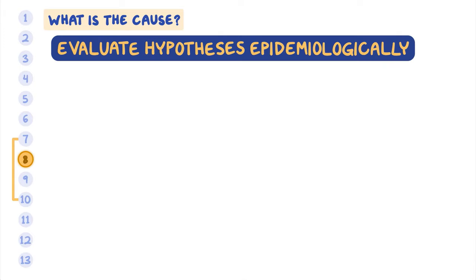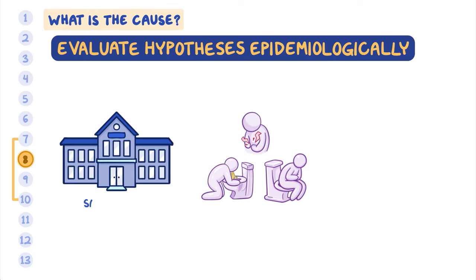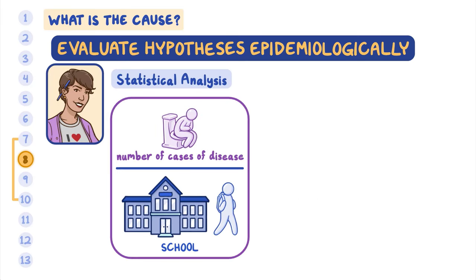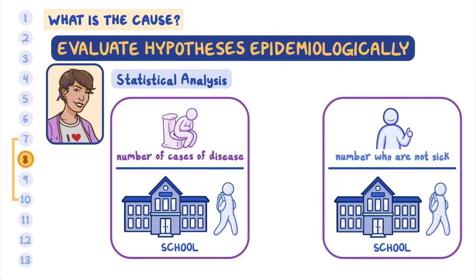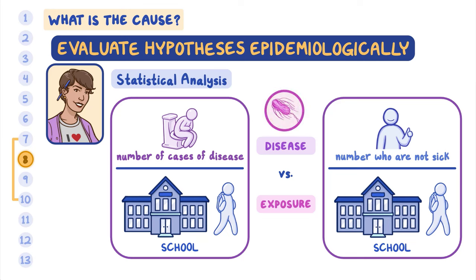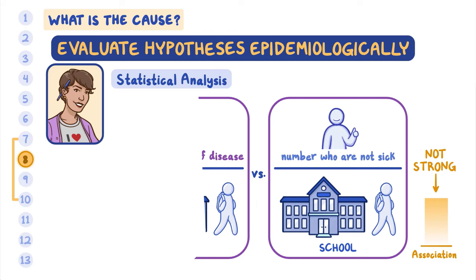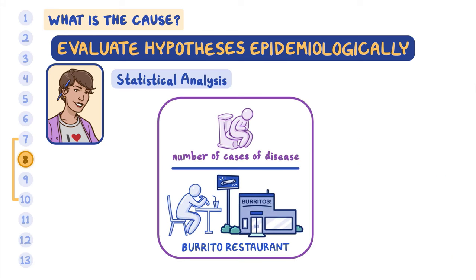These hypotheses can be evaluated in different ways. One way is to use analytic epidemiology to evaluate hypotheses epidemiologically, or quantify the associations among different exposures and disease. For example, many people who were sick went to the same school and ate at a new burrito restaurant in the last week. Using statistical analysis and information from a comparison group of people who did not get sick, Bella can measure the association between an exposure — such as going to school or visiting the burrito restaurant — and disease, such as having E. coli food poisoning. These calculations can tell us that there is not a strong association between going to the school and getting sick. So the team may go back and test other hypotheses, like if people were more likely to get sick with E. coli food poisoning if they ate at the burrito restaurant.